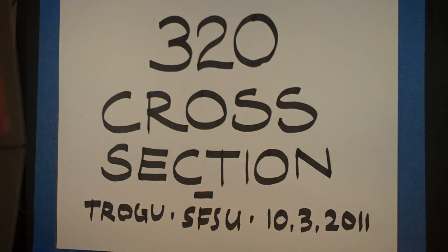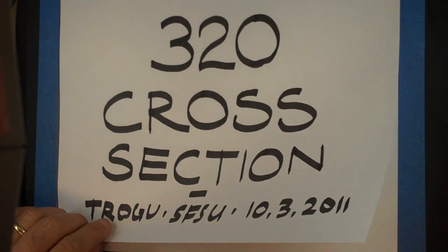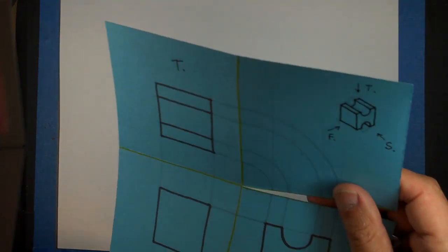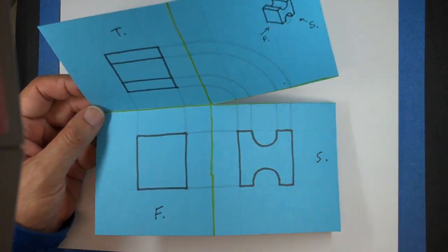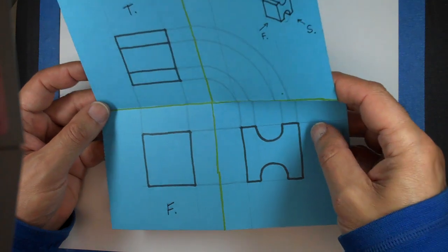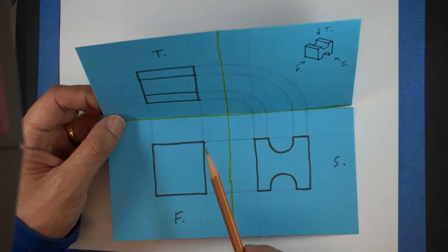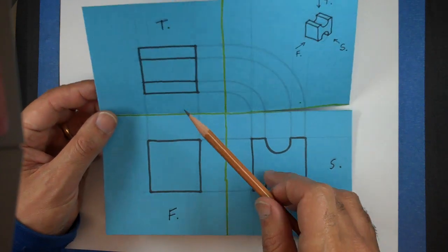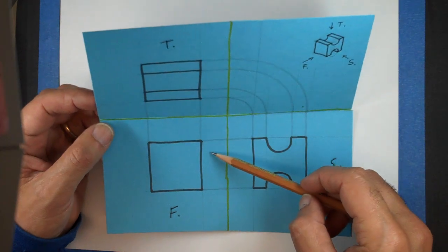So today we're going to talk about cross-sections, but before I do that I want to share this little model that I had made of a projection plane system because I realized that I didn't talk well about projection lines and how you can find the shape of the second view by simply projecting the lines from the other views.